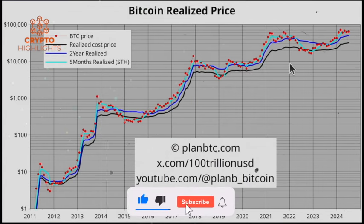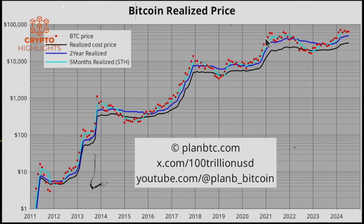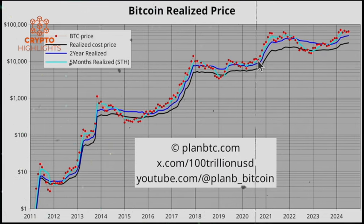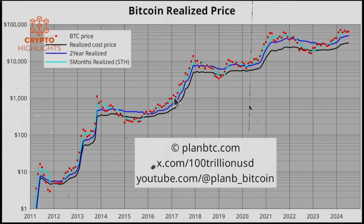The other interesting thing is that the short-term realized price acts as a support line in bull markets. We have dips in bull markets — a usual bull market can have minus 20%, minus 30% dips, and we just had one here. But usually it doesn't go really far below the five-month realized price. It happens every bull market that we stay more or less above this short-term five-month realized price. Very useful.